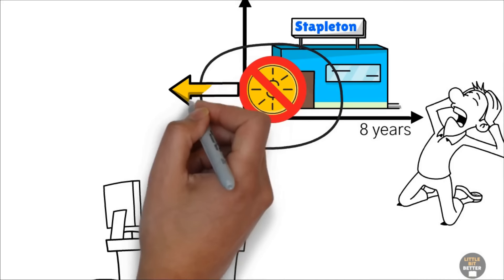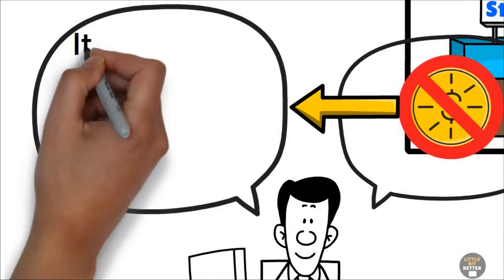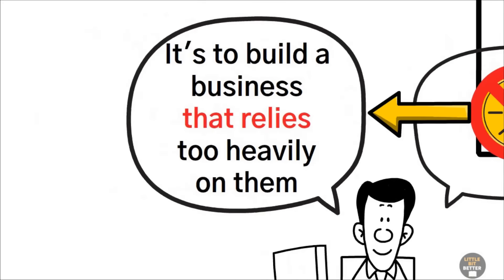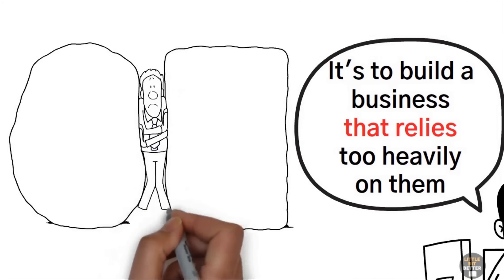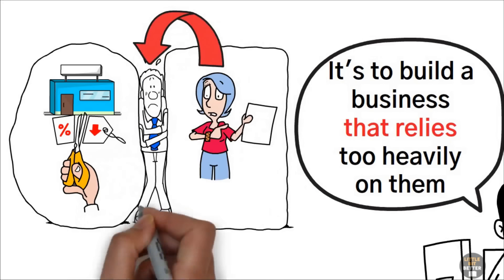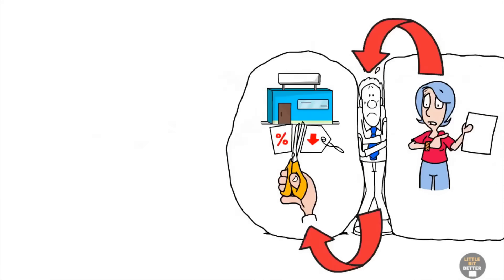Ted explained that the number one mistake entrepreneurs make is to build a business that relies too heavily on them. As a result, many business owners find themselves trapped in an unsellable business. Customers constantly ask to deal with the owner. The cycle repeats and the owner stays stuck.